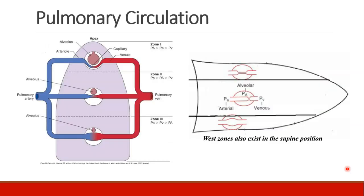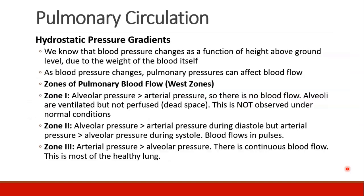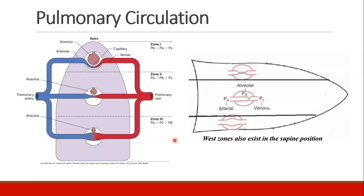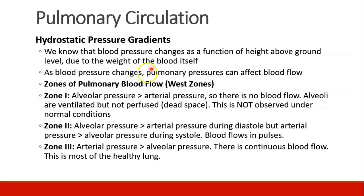I'll use the diagrams on the next slide as a reference. In zone 1, the highest zone, alveolar pressure is greater than arterial pressure. The alveoli, like we saw with the slinky, are very inflated at the apex of the lung, so it's very hard for blood to get past them because the pressure in the alveoli is higher than in the artery. In this case we don't see much blood flow — we have good ventilation but not much perfusion, and this is dead space. We don't see this a lot under normal clinical conditions.